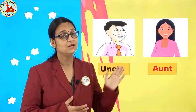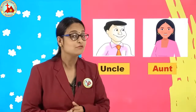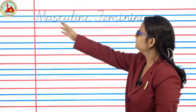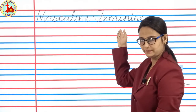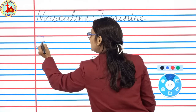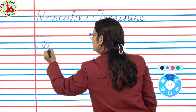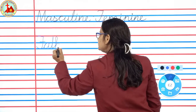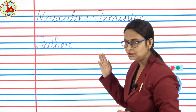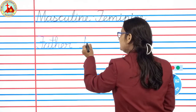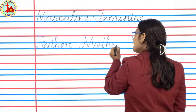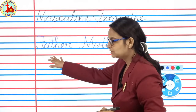I hope you understood this concept. Now we will practice some words — take out your four-line book. We will practice masculine and feminine. Our topic is masculine, feminine. First word is father: capital F-A-T-H-E-R. Father. And feminine word is mother: capital M-O-T-H-E-R. Mother. Father, mother.